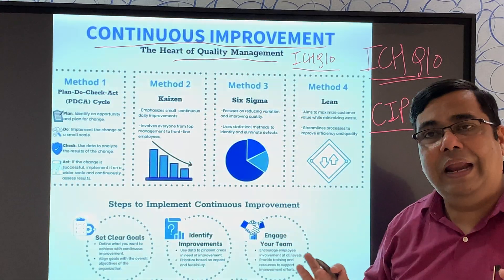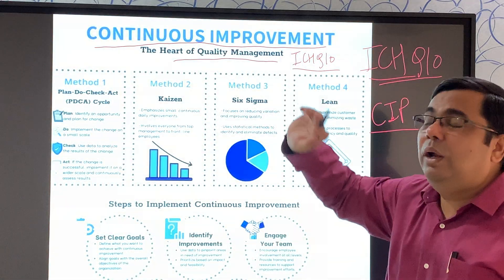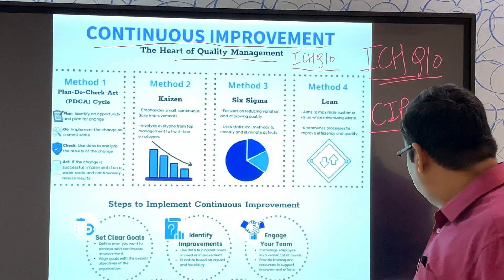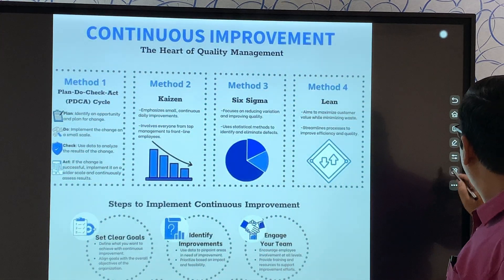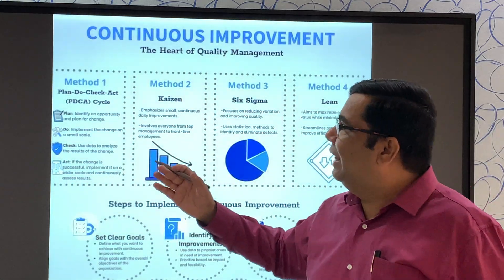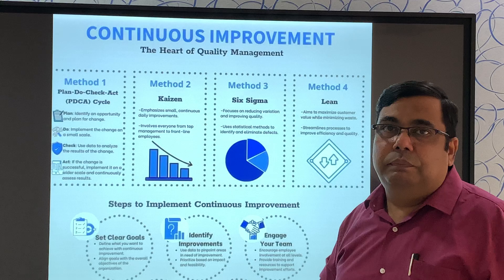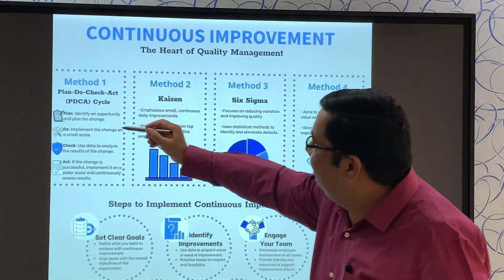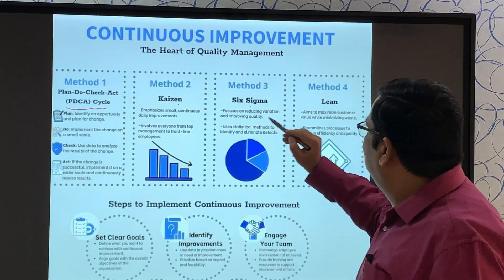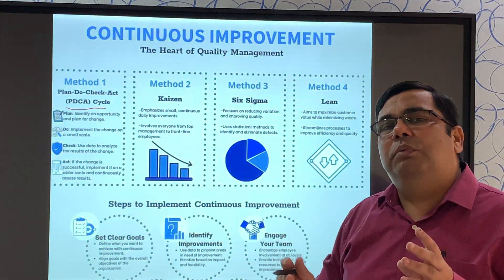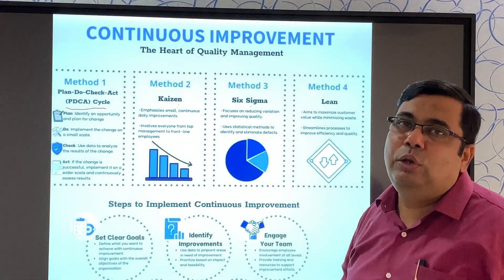You can go through the guideline and understand the ICH Q10 in detail, where there is a separate, special requirement for continuous improvement. You can have different strategies. Most of the time people will say these are part of pharma — PDCA (Plan Do Check Act), or Kaizen, or Six Sigma, or Lean. These are some methods through which you can show and achieve continuous improvement in your organization.